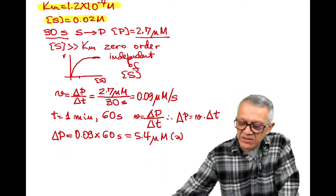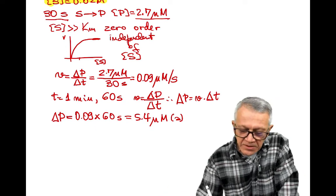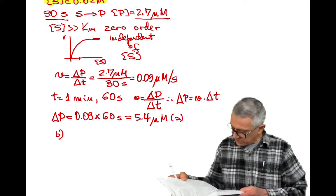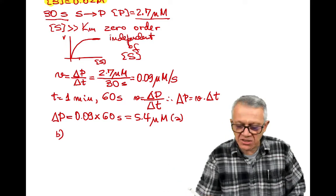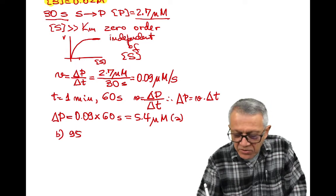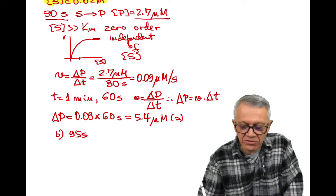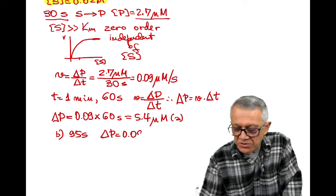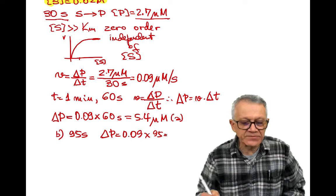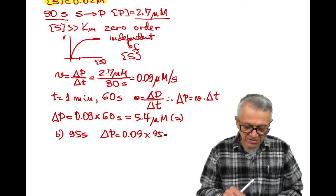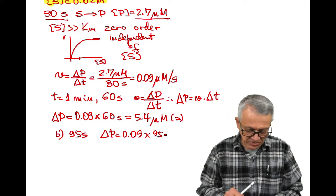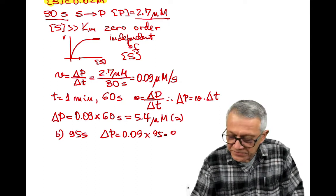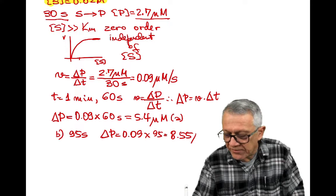Let me scroll down a little bit here so that we have more space to do part B. In part B is asking what is the product after 95 seconds. Same exercise except that now we have 95 seconds. So delta P equals 0.09 times 95, which is 8.55 micromolar.